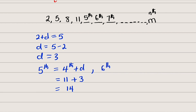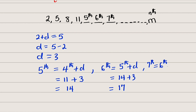For the sixth term, it is obtained by taking the fifth term plus d. The fifth term has already been obtained as 14, so the sixth term equals 14 plus 3, which is equal to 17. Now for the seventh term, it equals the sixth term plus the constant common difference, which is 17 plus 3, and hence this is equal to 20.